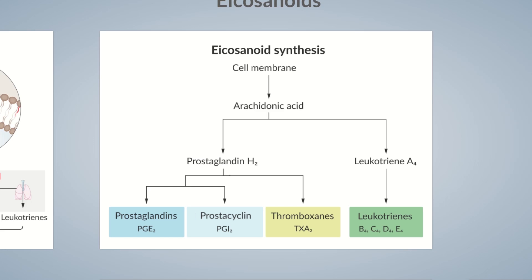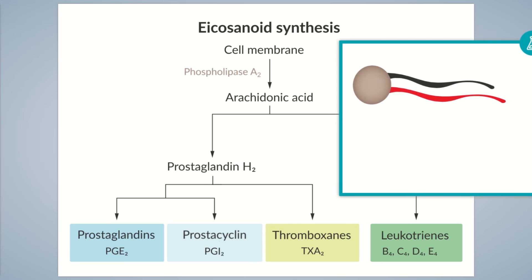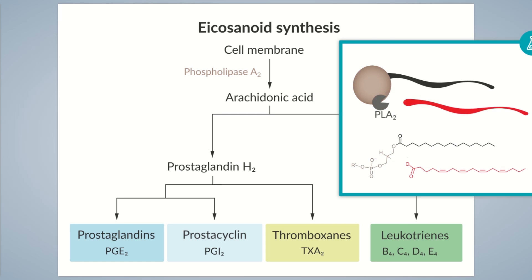Let's now take a closer look at the enzymes involved in their formation, starting again with arachidonic acid. Arachidonic acid is released on demand from the cell membrane. The most important enzyme involved in this process is phospholipase A2, in short PLA2. PLA2 cleaves arachidonic acid from the phospholipid in the biomembrane, setting it free for other reactions. You can see a schematic representation of a phospholipid at the top, while the bottom image shows the molecular structure.